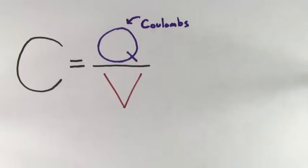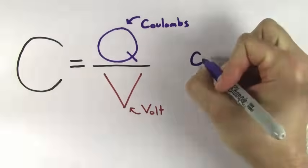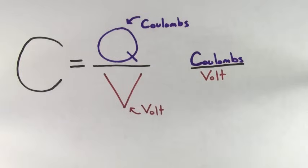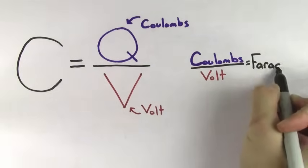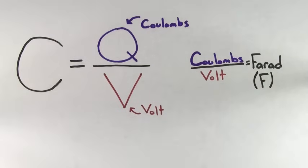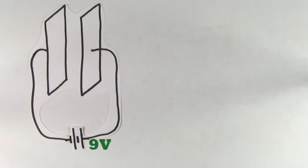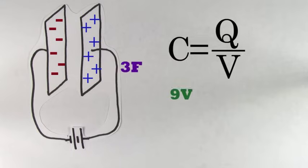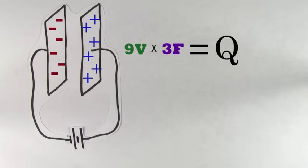Looking at the formula for capacitance, we can see that the units are going to be coulombs per volt. A coulomb per volt is called a farad in honor of the English physicist Michael Faraday. So if you allow a 9-volt battery to fully charge up a 3-farad capacitor, the charge stored is going to be 27 coulombs.